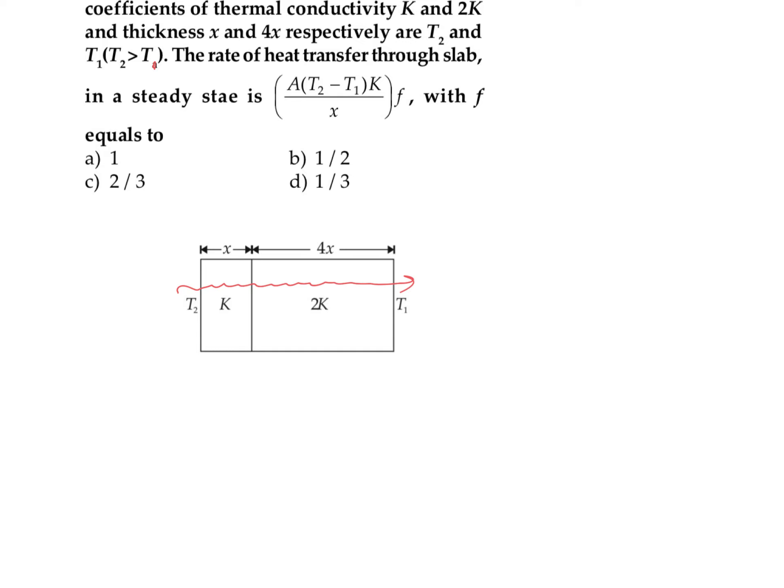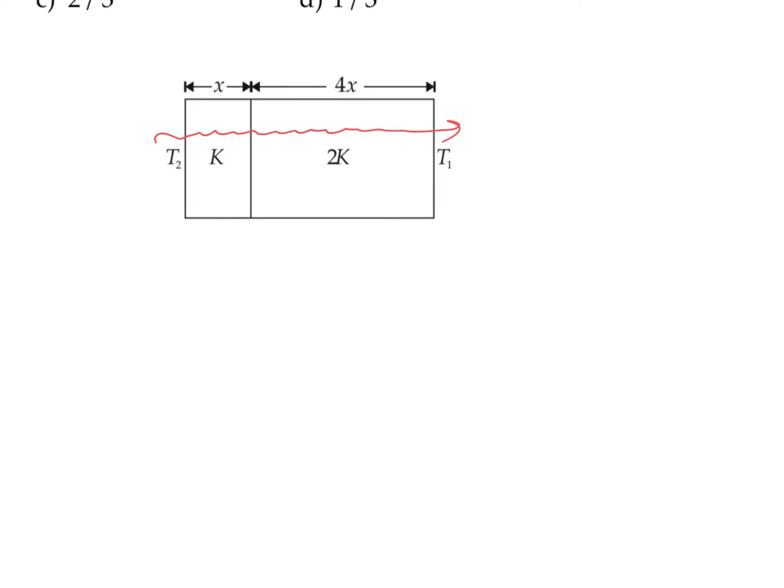This resistance is R1 and this resistance is R2. The equivalent resistance of this combination will be R1 plus R2 because they are connected in series. We can write the value of R as